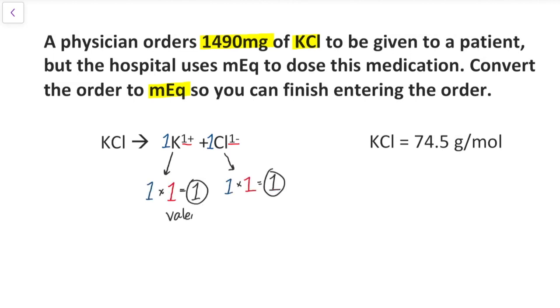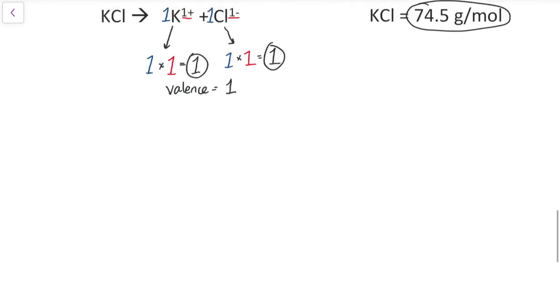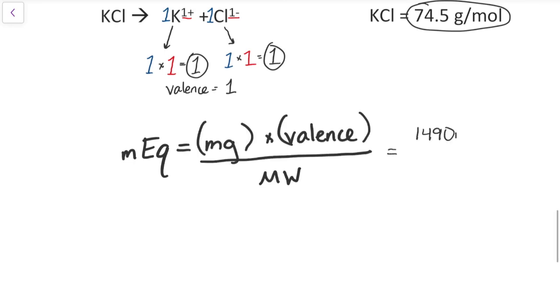Now that we have the molecular weight and valence, let's plug it into the equation and determine the milliequivalence. You just need to solve, and it looks like the amount of milliequivalence in 1,490 milligrams of potassium chloride is equal to 20 milliequivalence.